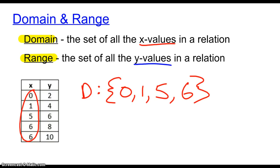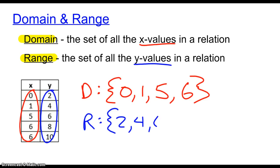The possible y values are listed right here — that's our range — and we have to list those out too. So: two, four, six, eight, ten. And that's my domain and range for this particular table or set relation.